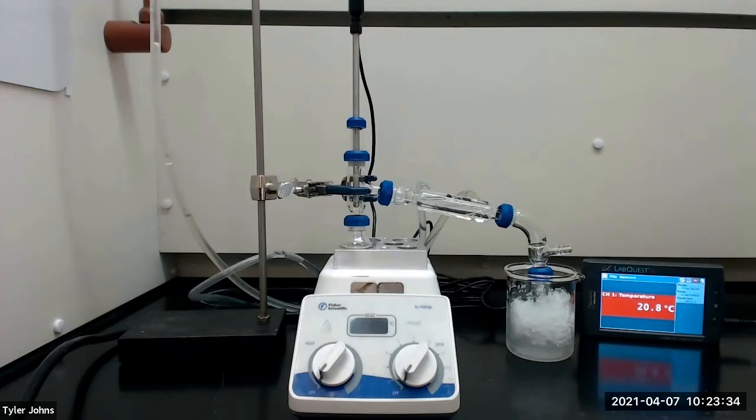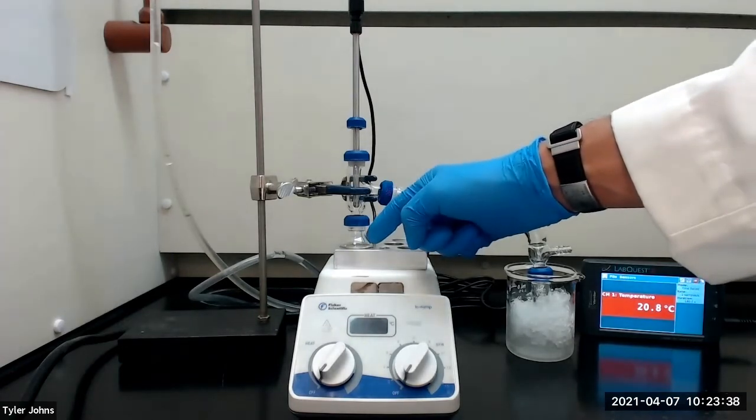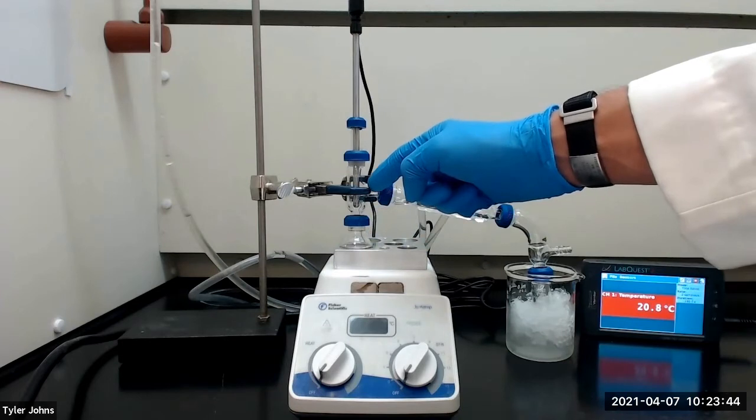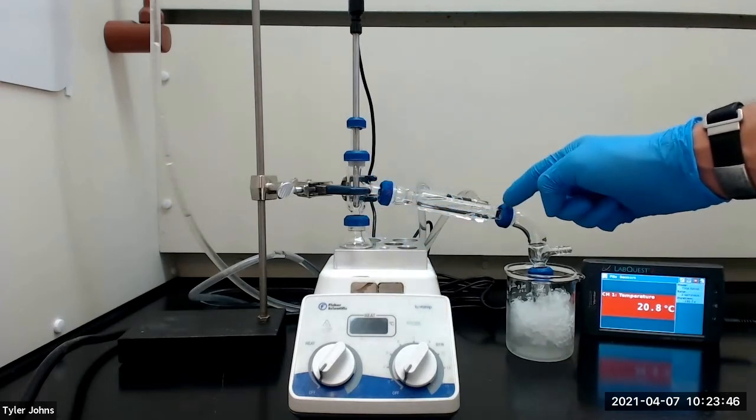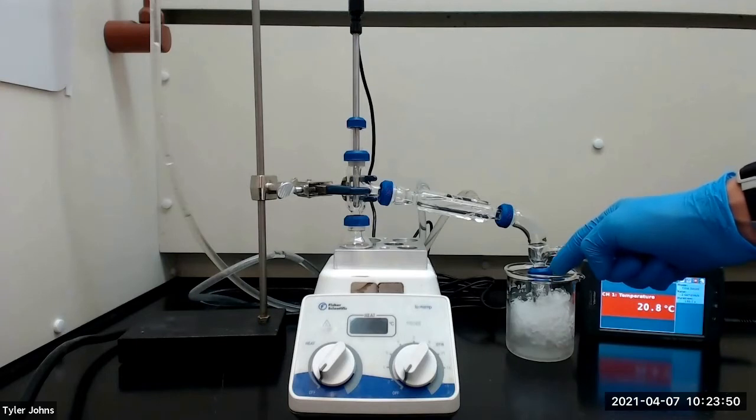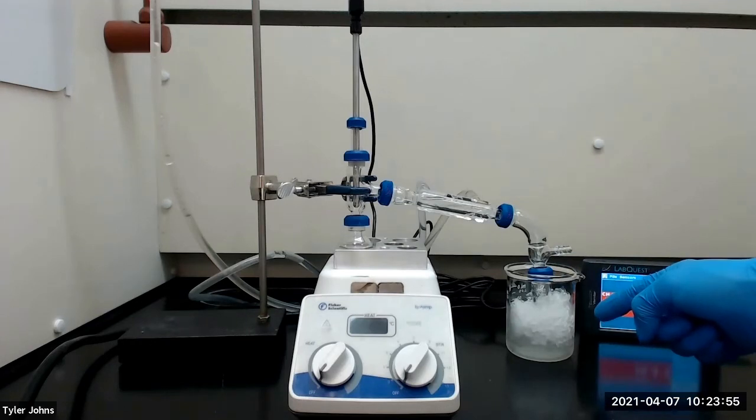We will next purify the ester by distillation. I have attached the 10 milliliter round bottom flask with the crude ester product to the distillation apparatus, which consists of a distillation head, a water-cooled condenser, a bent vacuum adapter, and we will collect the distillate in the pre-weighed 5 milliliter conical vial.